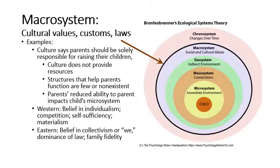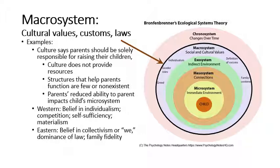As part of the macrosystem, we can list: individualism, greed as part of a Western framework, gender roles and what's expected of males and females, sexual variance — whether that's something a person is helped to understand or rejected for. How do we define success? If success is defined as having a content life and giving love to one's family, that's very different from when success is defined in material and financial terms.